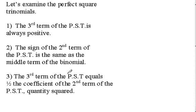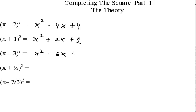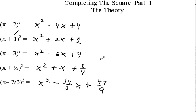The third term of the perfect square trinomial equals one-half the coefficient of the second term of the perfect square trinomial, quantity squared. Let's see what that means: the third term equals one-half the coefficient of the second term, and then that quantity is squared.